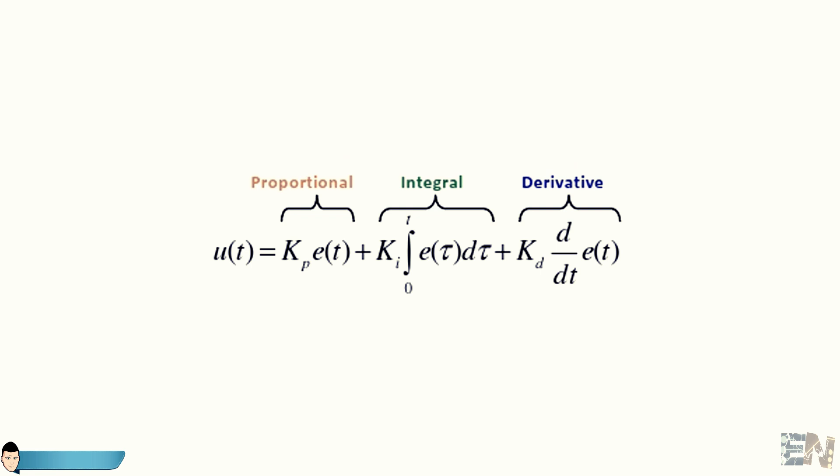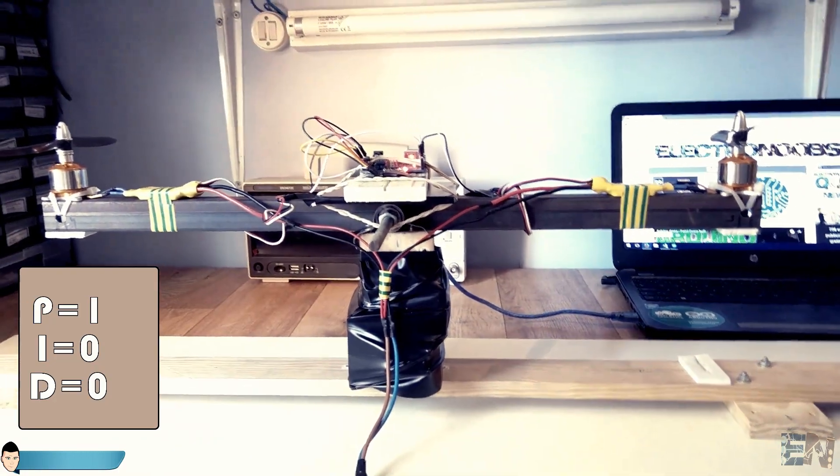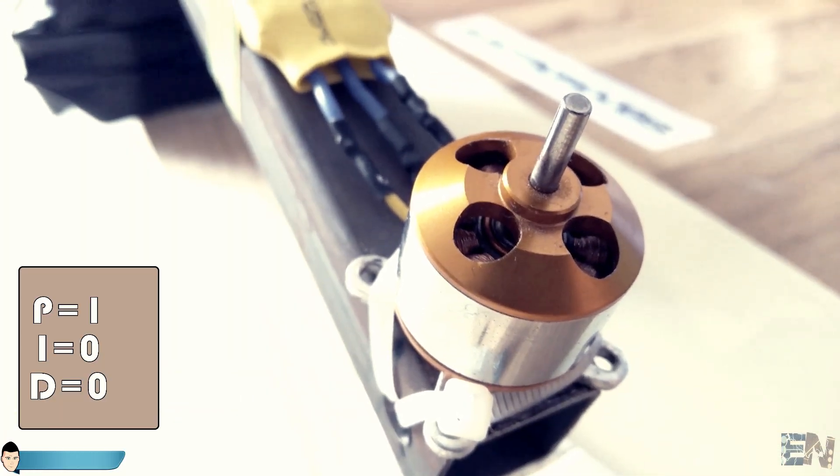So let's start with the integral and derivative constants equal to zero and the proportional to one. In this case the output of the PID control will be the error itself.